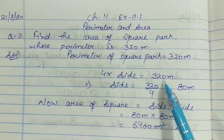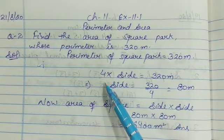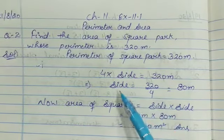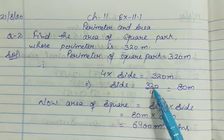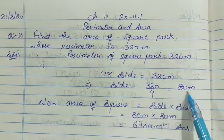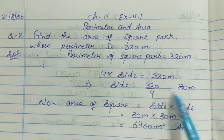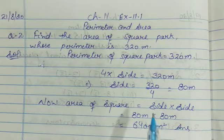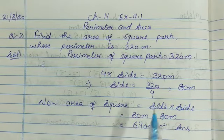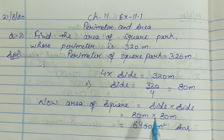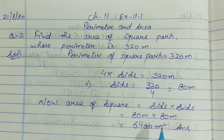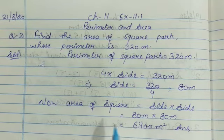Here 4 is multiplying with side, so we divide. Side equals 320 over 4, which equals 80. The side of the square is 80 meters. Now area of square equals side multiplied by side, which is 80 meter multiplied by 80 meter. 8 eights are 64 with two zeros, so 6400 meter square.